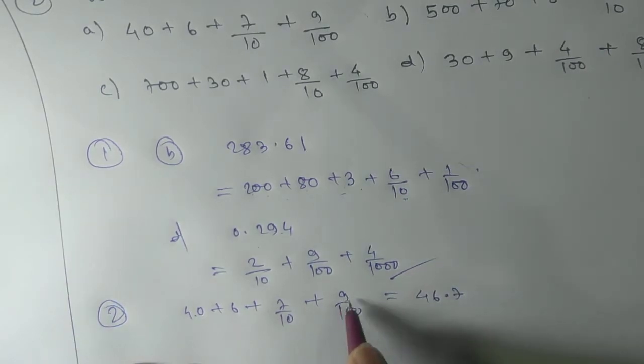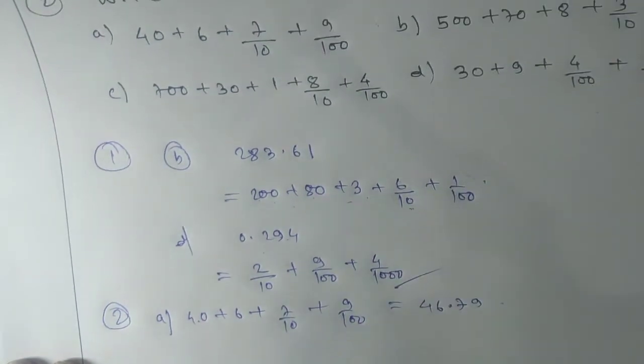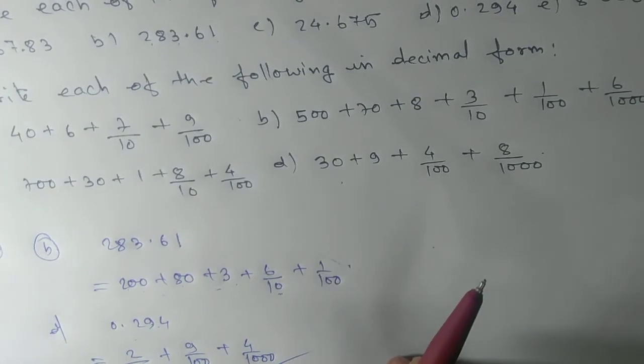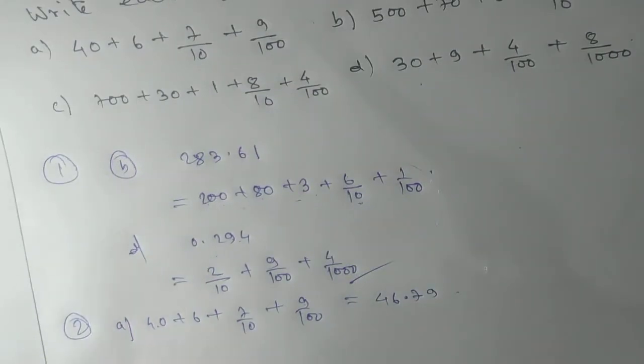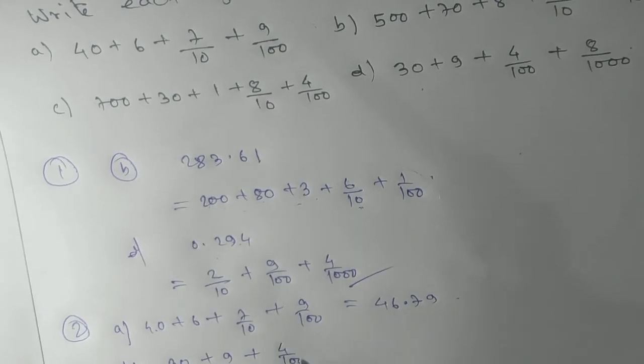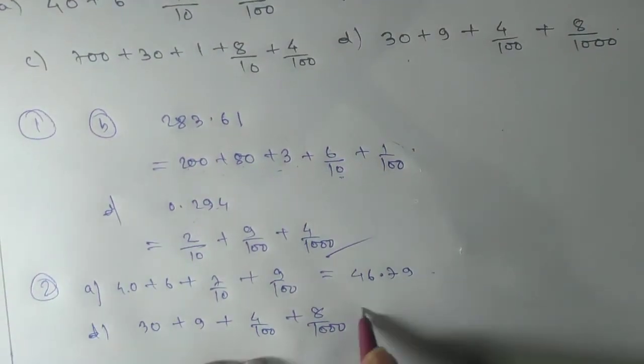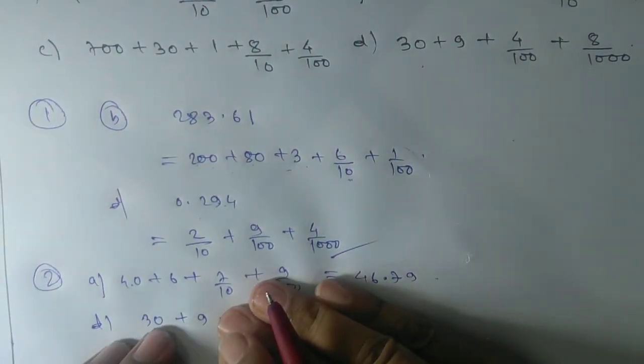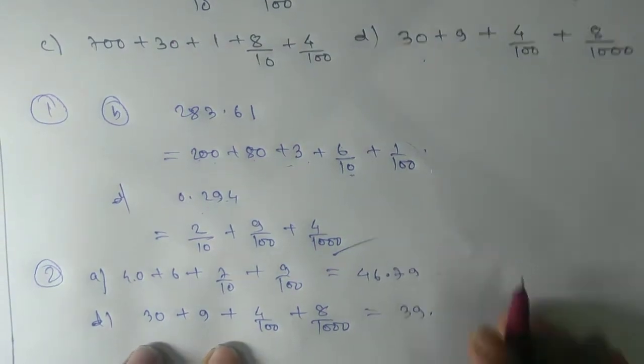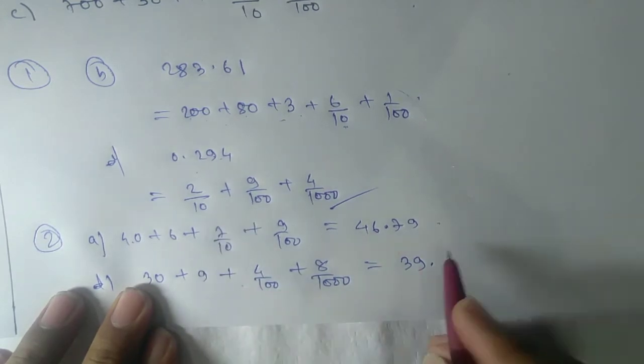If I take another one, D number, here we have D number. 30 plus 9 plus 4 by 100 plus 8 by 1000. Now in this question, you can see the first whole part is 30 plus 9, so you write here 39, after that point.